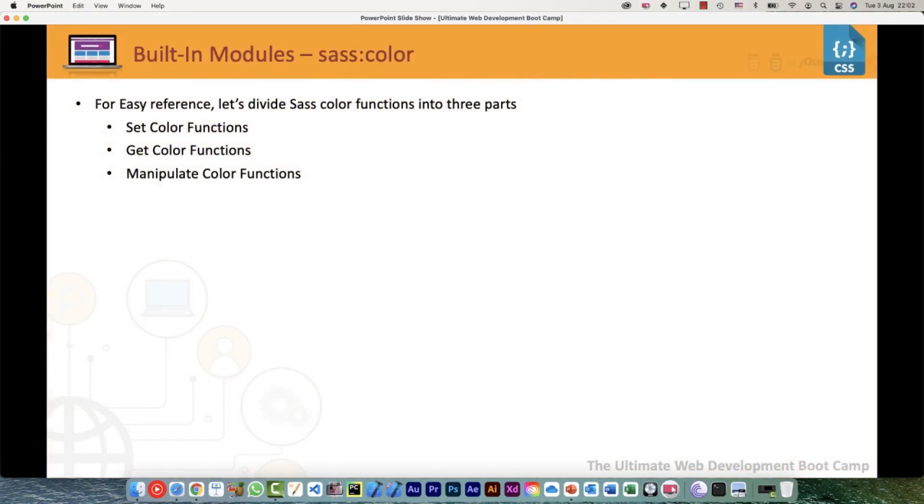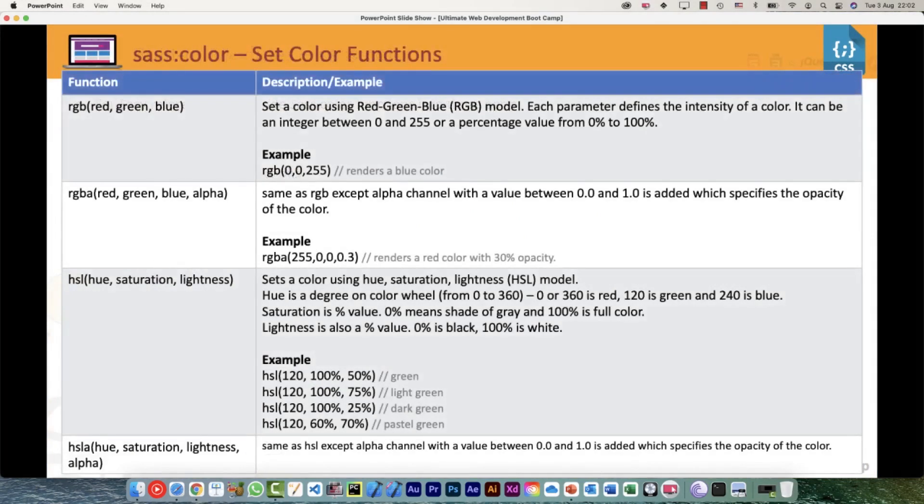We'll start with the first one, that is sass:color. Basically, we can divide it into three main parts: there are functions related to setting the colors, getting the colors, and then manipulating those. If we look at some of those, we have already seen and used them, not only in Sass but in CSS as well. Like rgb() where we define red, green, and blue, it sets up the color. Then we can have that with the help of alpha as well, where alpha can be a value between 0 and 1, whereas red, green, and blue values are between 0 and 255.